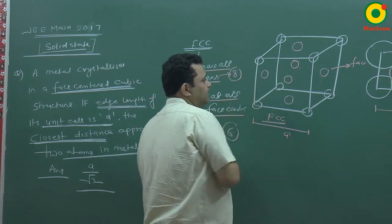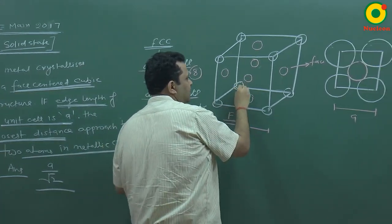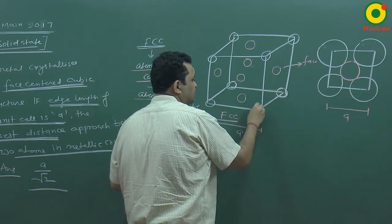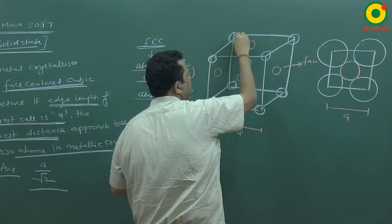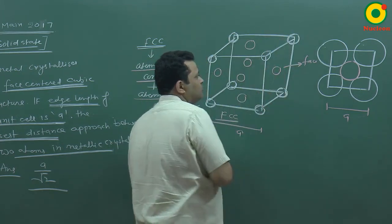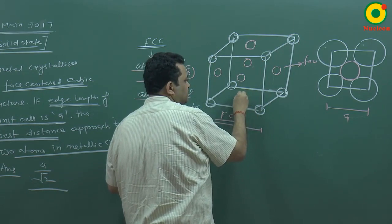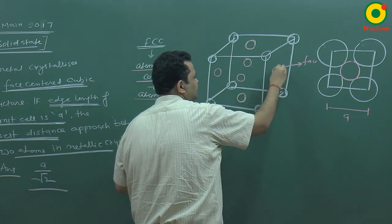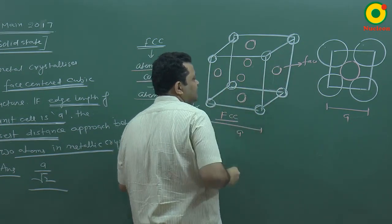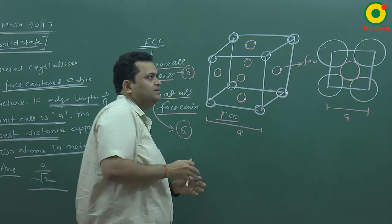If I draw the structure, what do we have in the cube? Eight atoms arranged at eight corners, and then we have in the center of each face eight atoms. These are faces. How many faces do you imagine?